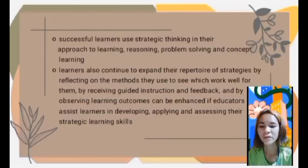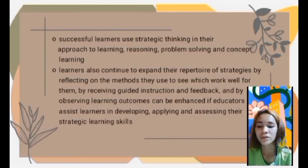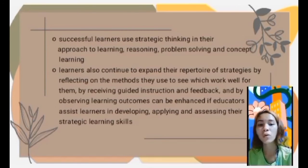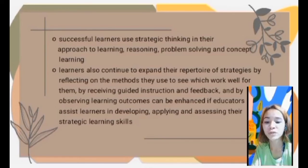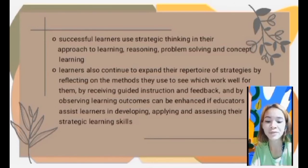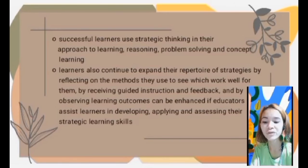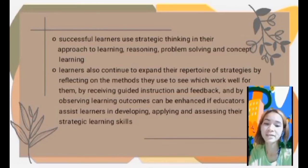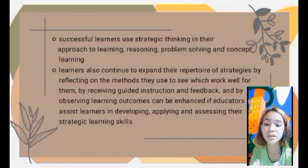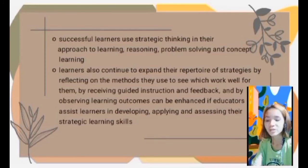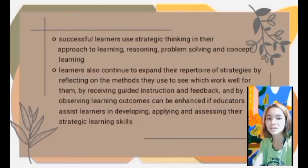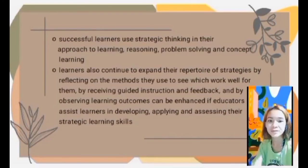Successful learners can reflect on how they think and learn, set reasonable learning or performance goals, and monitor their progress toward those goals. When we say successful learner, they are active, goal-oriented, and self-regulating. A successful learner also knows what to do if a problem occurs or if they are not making sufficient or timely progress toward a goal — by generating methods to reach their goal or reassessing the appropriateness and utility of the goal. This means the successful learner is a resourceful person who finds ways to manage things in order to reach their goal. Instructional methods that focus on helping students develop these higher-order or metacognitive strategies can enhance student learning and personal responsibility for learning.